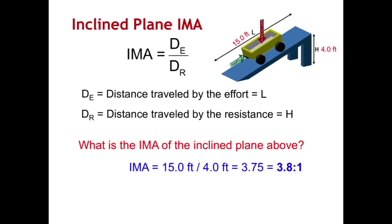So what is the IMA for this particular inclined plane? My IMA is going to be the length or distance effort, so that's 15.0 feet. And then my height, which is my distance resistance right here, is 4.0 feet. I say 15.0 divided by 4.0. My feet cancel out. I treat units just like x's and y's. Feet are the same, just like an x and an x would cancel out, so do feet.